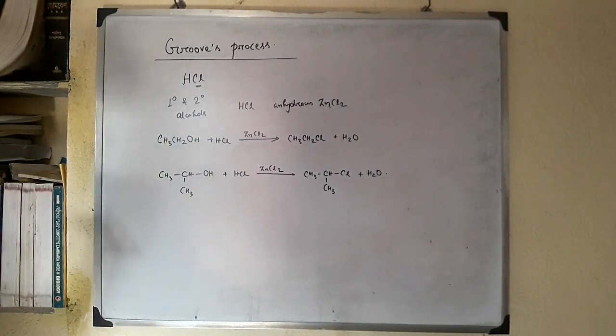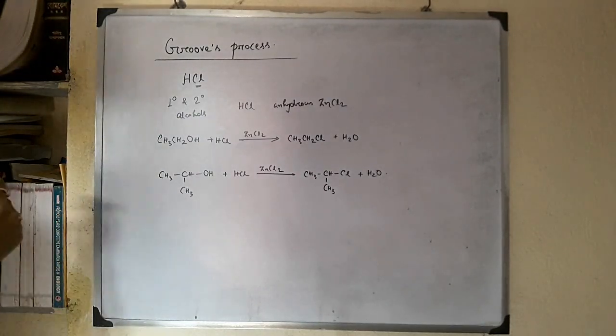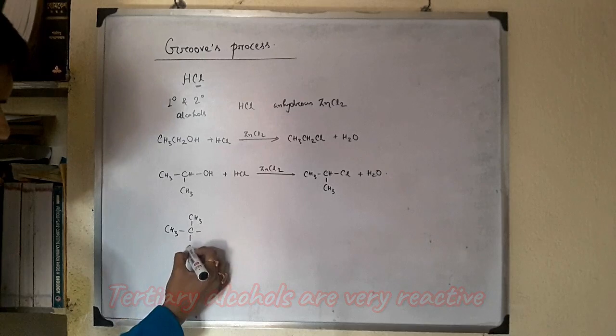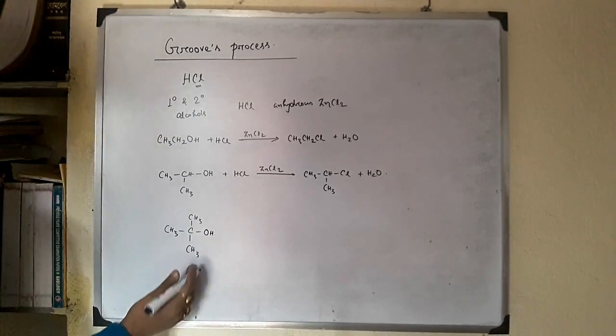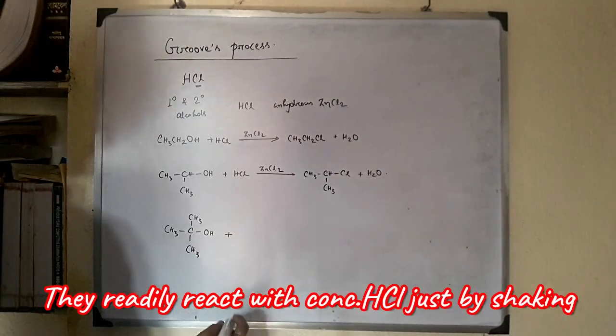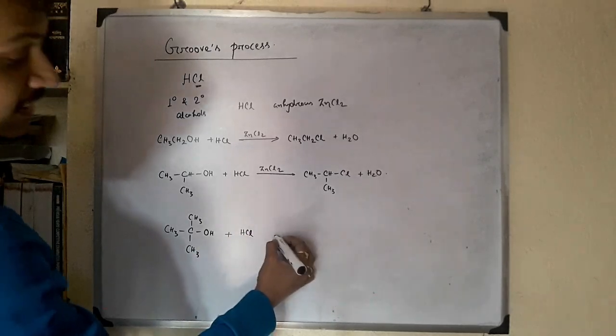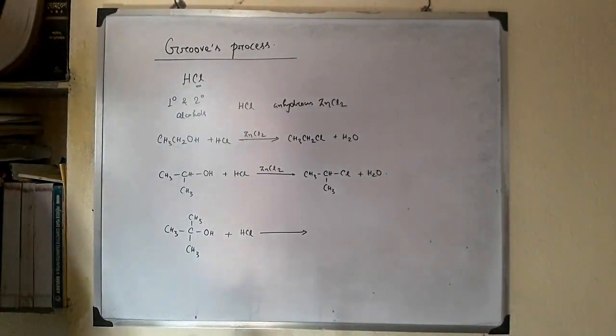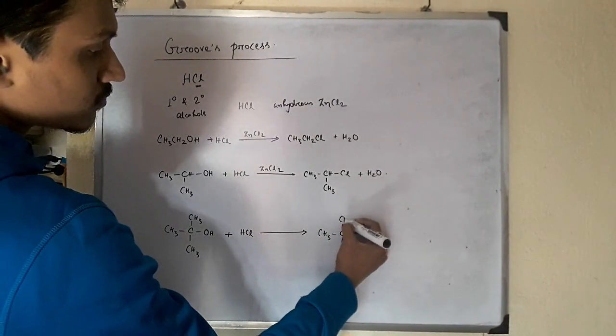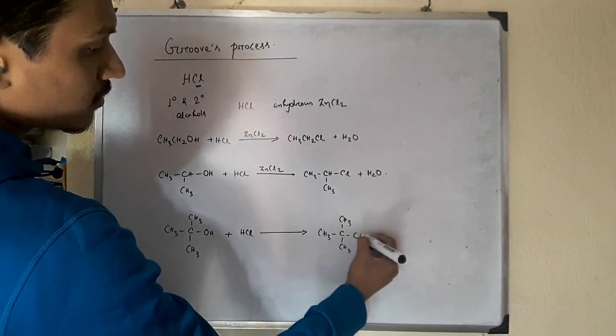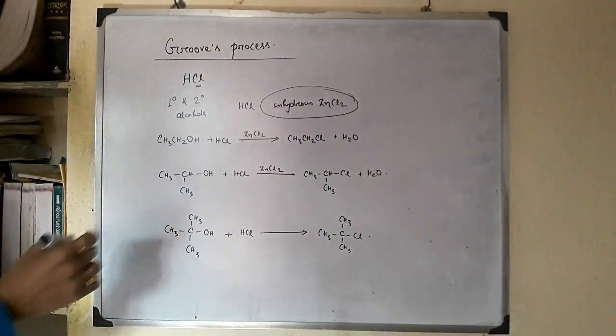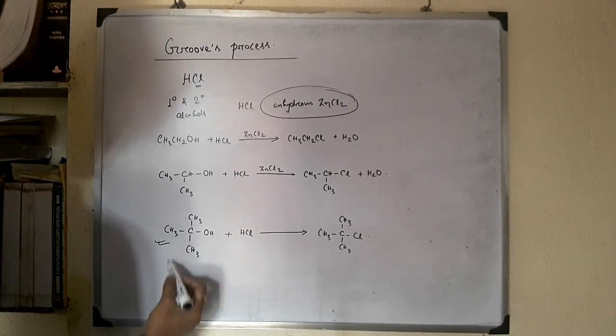This process is called Groves process. But in case of tertiary butyl alcohols, this alcohol readily reacts with concentrated HCl in the absence of zinc chloride. Just by shaking with concentrated HCl, it forms tertiary butyl chloride. What is the role of anhydrous zinc chloride and why is it not used in case of tertiary butyl alcohol?